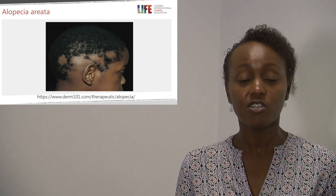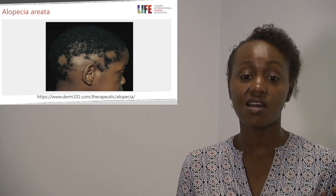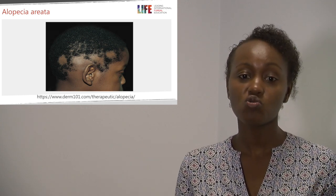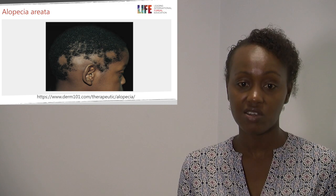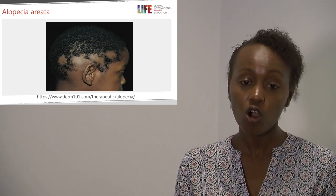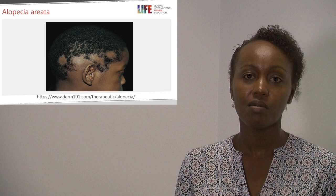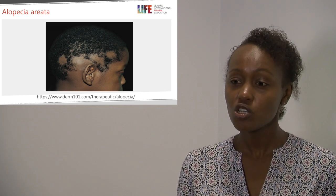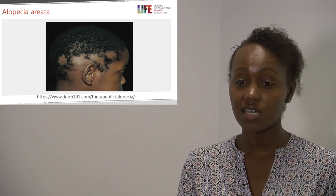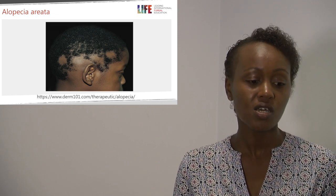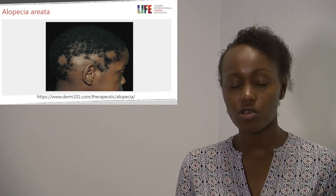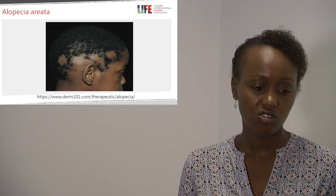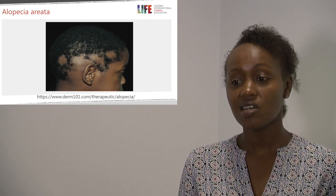Tinea capitis is a localized infection of the scalp, while alopecia areata affects other hairy areas more commonly. Alopecia areata may also be associated with other systemic signs of autoimmunity — nail involvement, or other autoimmune diseases like type 1 diabetes or celiac disease — and has a hereditary component.